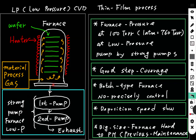Then we use a two-stage pump — one stage and two stage — to pump the air out, to make it a low pressure furnace. Then we put in the material process gas, and the gas will form a layer of thin film on the surface of the wafer.